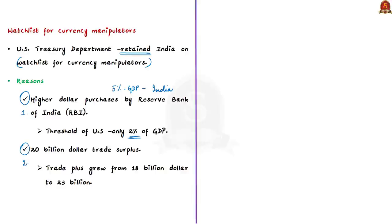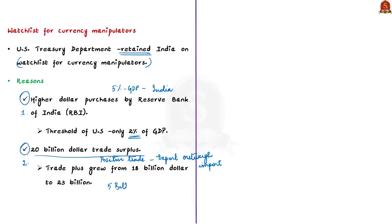Another reason for inclusion in the currency manipulator watch list is the $20 billion trade surplus India has with the US. Trade surplus is an economic indicator of a positive trade balance in which a nation's exports outweigh its imports. India's trade surplus with the US grew from $18 billion to $23 billion in 2020-21. The US finds this illogical because imports from India fell more sharply than exports in this COVID-affected year, so the trade surplus should have decreased — leading the US to suspect currency manipulation.